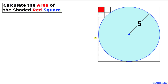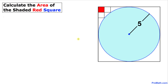Welcome to PreMath. In this video tutorial we have a circle with radius 5 that is inscribed in a square, and moreover we have three identical squares in the corner. Now we are going to calculate the area of the shaded red square. Let's get started with the solution.